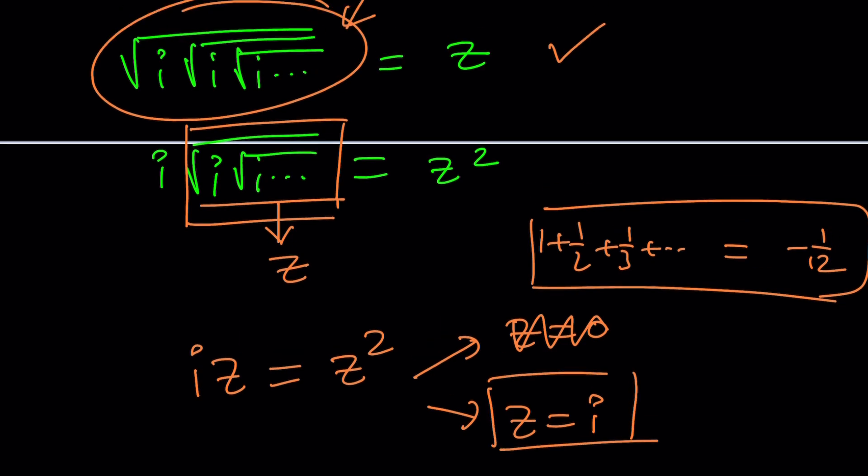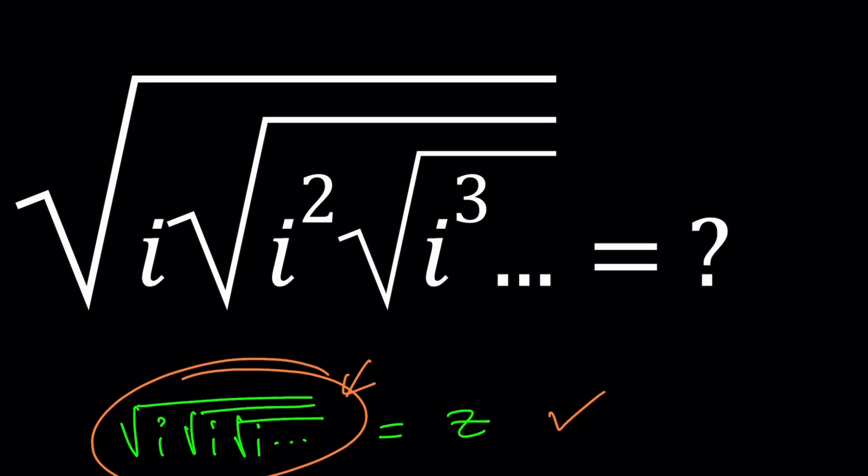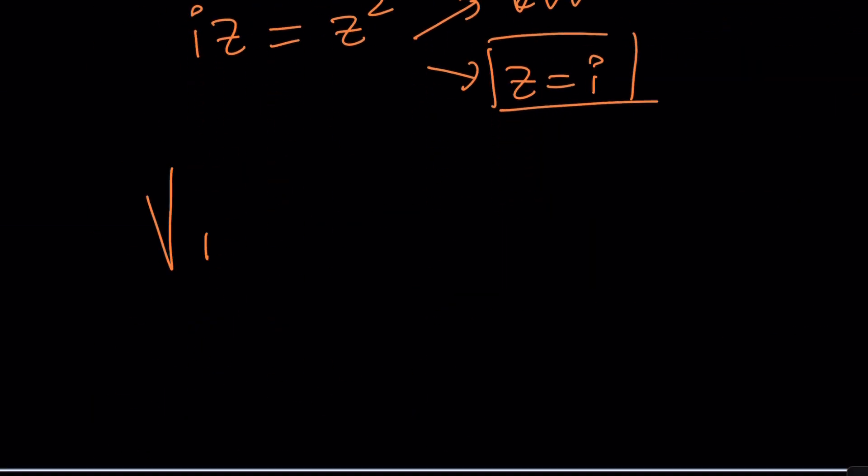We can do it with that example, but with our original expression, we're not able to do that. Why? Because something weird about this: the powers of i are increasing gradually. There's a pattern, but how do you handle something like this? You can't set it equal to z, because when you do z squared, you're not going to get z, nor something that looks like z.